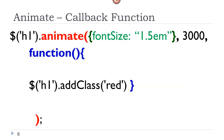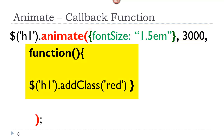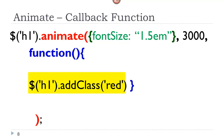Here is an example of how you would use a callback function. We have the animate method with the property to be manipulated, the speed factor, and then the callback function. So essentially, after the font size grew to 1.5em over a duration of 3 seconds, we will now add the class 'red', which would change the color. This is an example of a callback function.